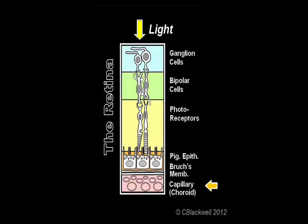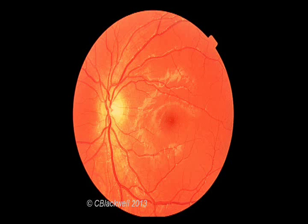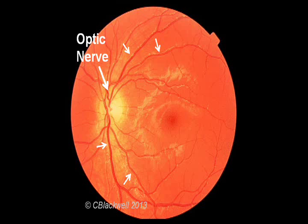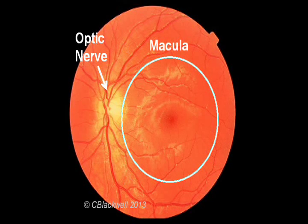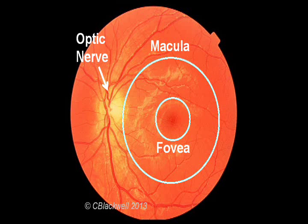Beneath that is a layer of blood vessels that supplies the outer retina with the oxygen and nutrients it needs to function. The retina is a very metabolically active structure, so blood supply is important. This is the view looking directly into the retina. The most obvious landmark is the optic nerve and blood vessels coming out from it. The macula is the area of central vision. The fovea, slightly darker, is the area of most finely detailed vision.